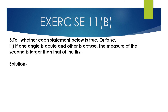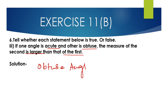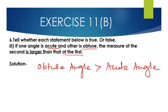Third bit: 'If one angle is acute and the other is obtuse, the measure of the second is larger than the first.' An acute angle is more than 0° but less than 90°, and an obtuse angle is more than 90° but less than 180°. So the obtuse angle is always greater than the acute angle. This is true.